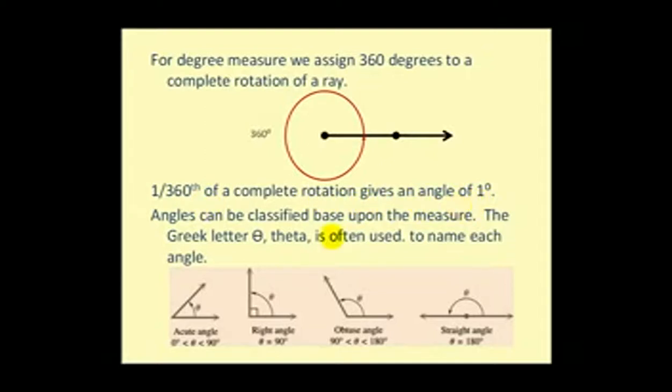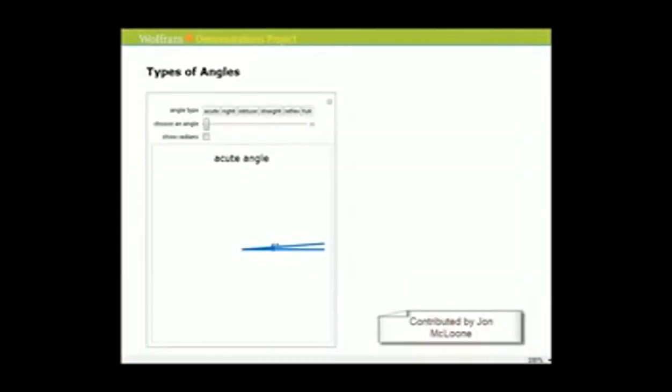Angles can be classified based upon their measure. The Greek letter theta is often used to name each angle. So let's take a look at the different types of angles. If an angle measures between zero and 90 degrees, as we see here, it's called an acute angle.